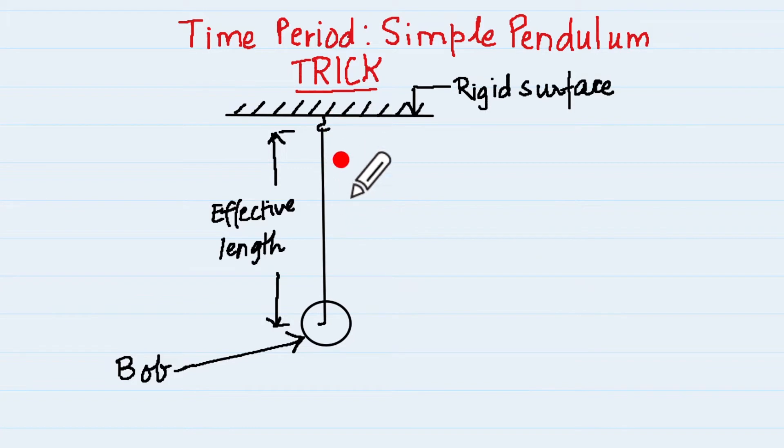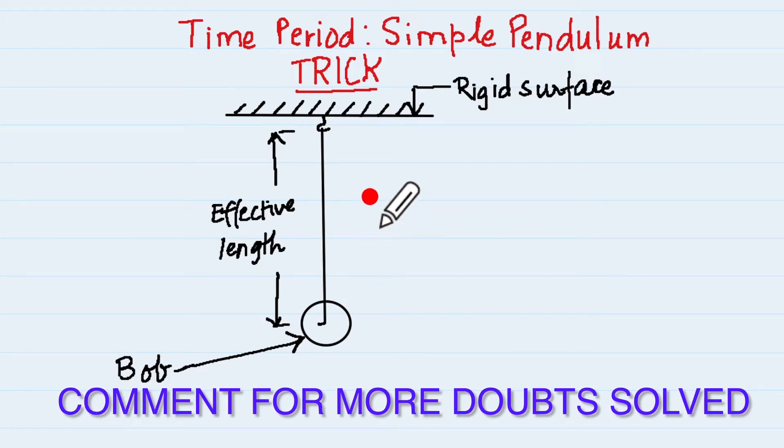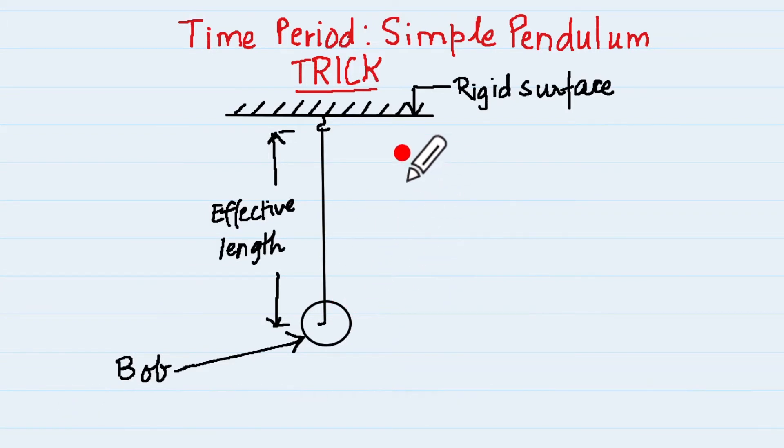Most of you have learned about the simple pendulum in your chapter 1 of physics syllabus. Now what does the simple pendulum look like? It has the rigid surface and it has a thin string with a heavy bob suspended from this hook.